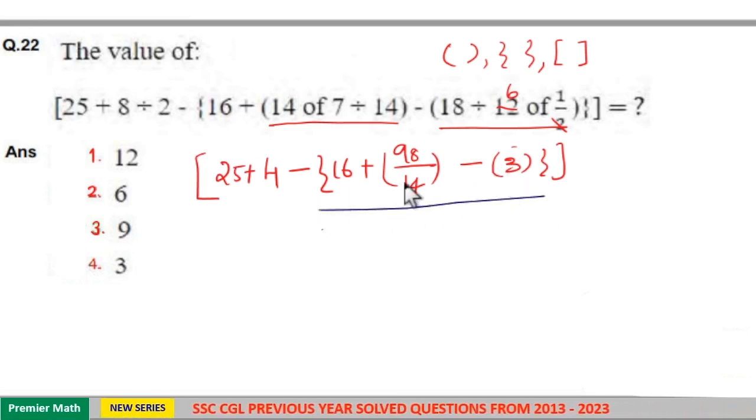Now here 98 by 14. In this bracket, division first: 98 by 14 is equal to 7. Now 16 plus 7 is equal to 23. 23 minus 3 is equal to 20.